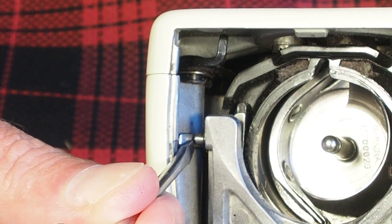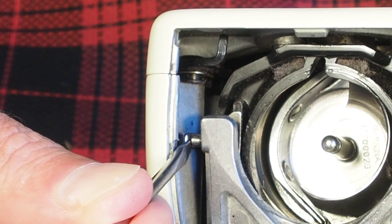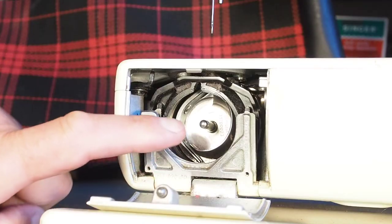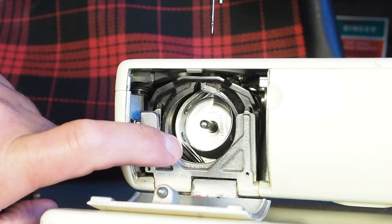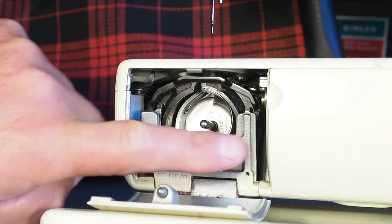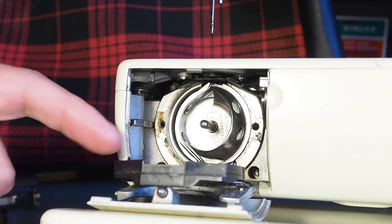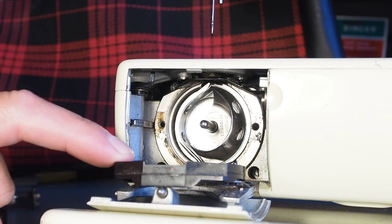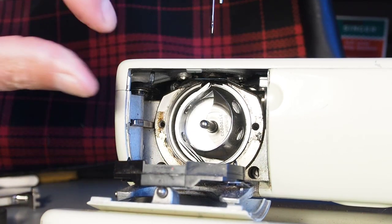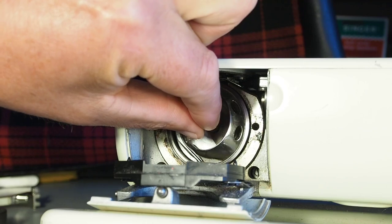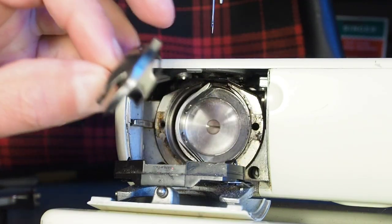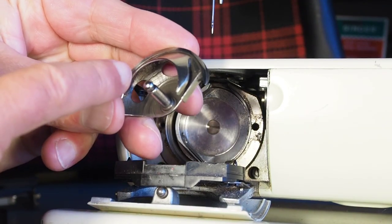And that allows this here. So this is the retainer here. Retainer ring to swing down and out of the way. And now we can just simply pull the hook straight out. The hook here is sometimes known as a shuttle.